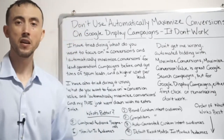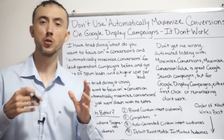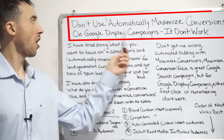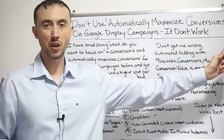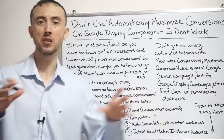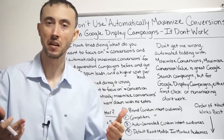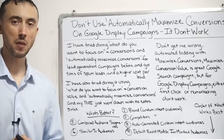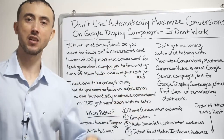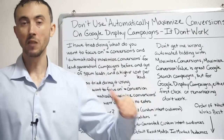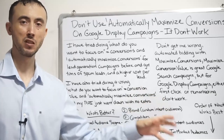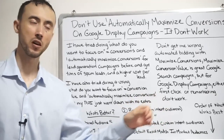Today's video, we're going to talk about why, if you're going to do Google Display Network ads, you don't want to use the automatically maximize conversions option under bidding — which is basically Google trying to find you more customers without doing manual bidding. I'm going to explain why you don't want to do that, how it's not going to get you any more sales and will actually end up wasting most, if not all, of your money, and then what your alternative options are.